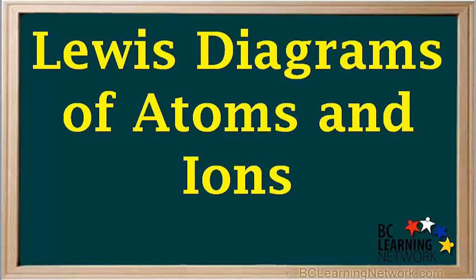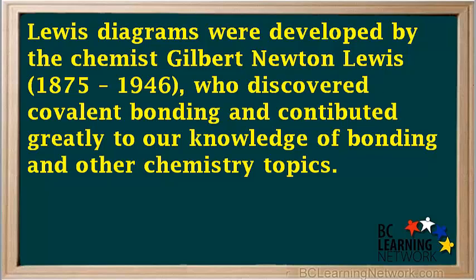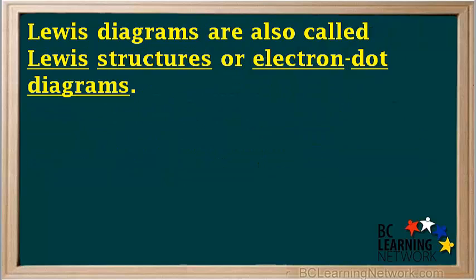This video will show you how to draw Lewis diagrams for neutral atoms and for positive and negative ions. Lewis diagrams were developed by chemist Gilbert Newton Lewis, who discovered covalent bonding and contributed greatly to our knowledge of bonding and other chemistry topics. Lewis diagrams are also called Lewis structures, or electron dot diagrams.